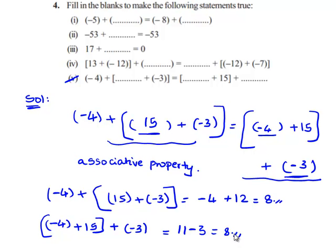Therefore, we can see that when negative 4, 15, and negative 3 are added in any order, we get the same value: 8. This is because of the associative property of addition of integers.